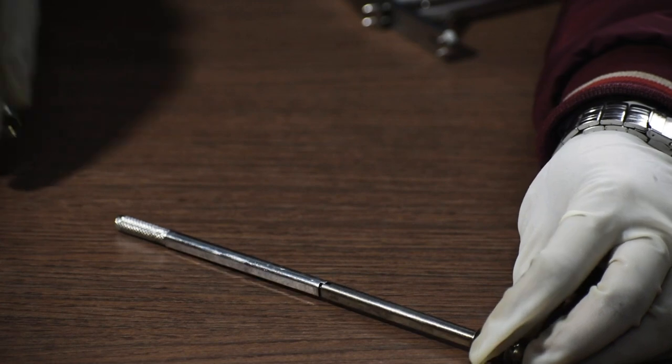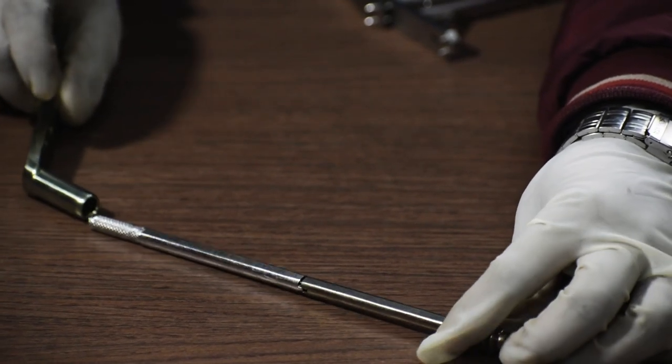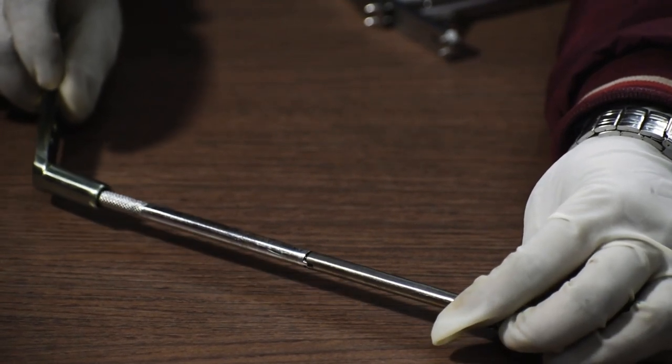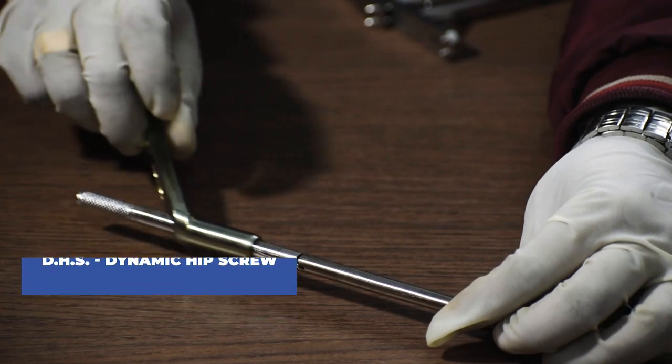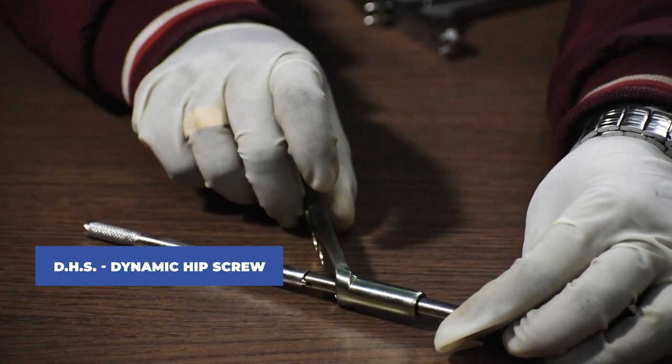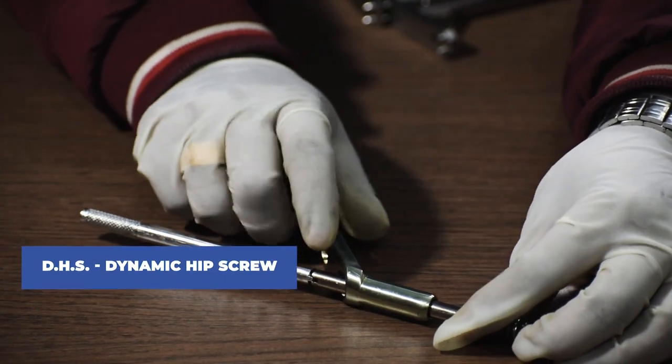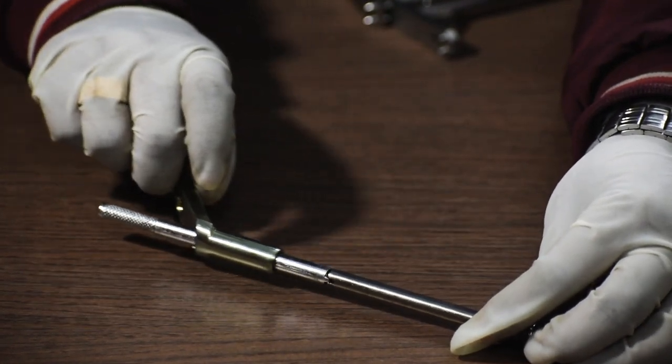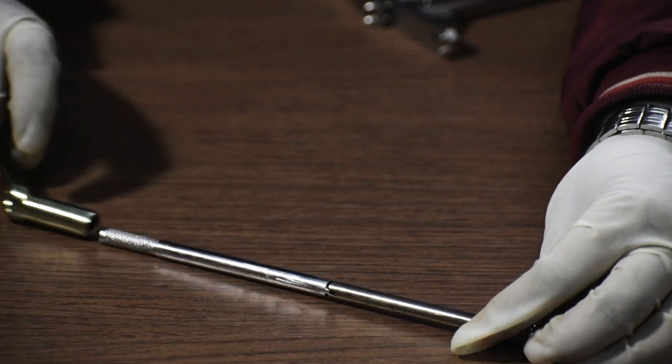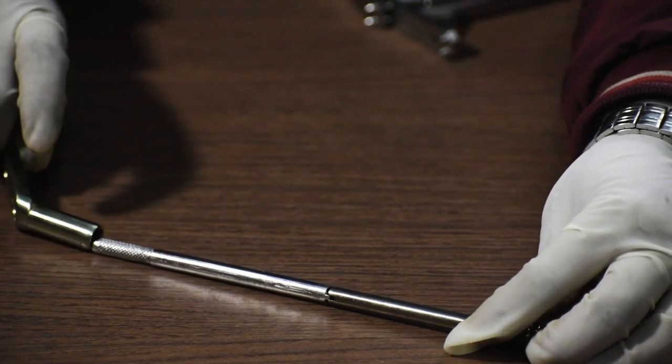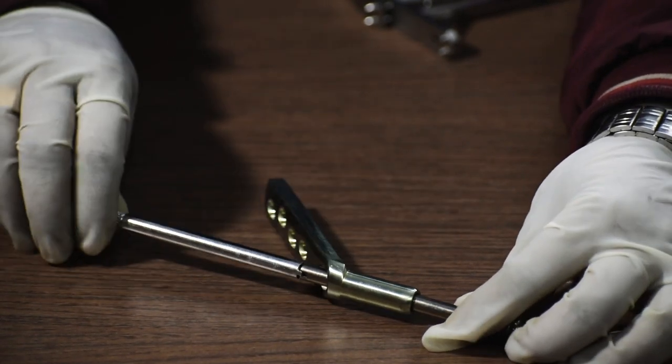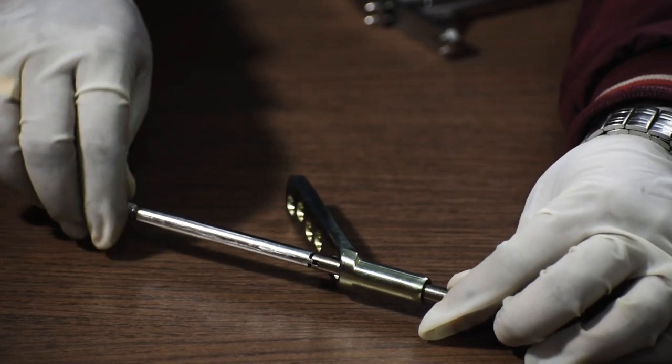Now we use a coupling screw or a plate holder to make the fixation of the DHS plate easier. Now comes the DHS plate, long or short barrel depending upon the fracture will be attached with the lag screw with the help of this coupling screw or the plate holder. This plate holder helps the DHS plate to slide through and get attached to the lag screw without any obstruction smoothly as you can see here.